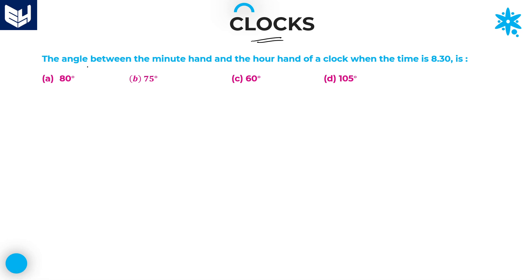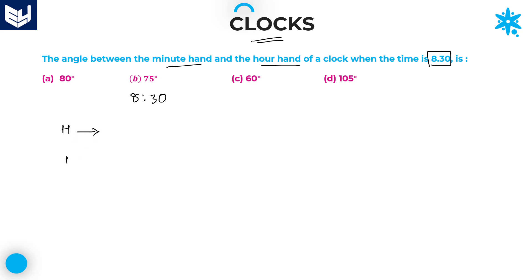The question is: what is the angle between the minutes hand and hours hand of a clock when the time is 8:30? Without using any formulas, let us take the hours hand separately and the minutes hand separately.